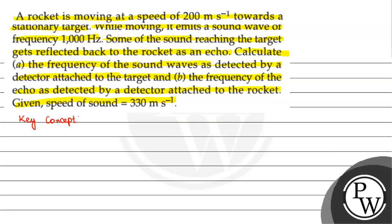The key concept within the question would be apparent frequency f prime will be given by f0 times 1 minus vs by v to the power minus 1. This is vs by v because source is moving towards the target.